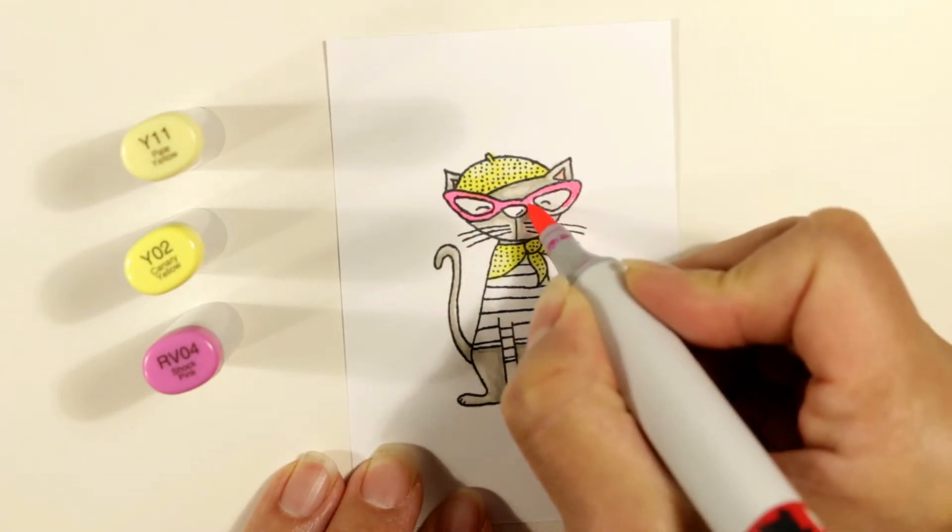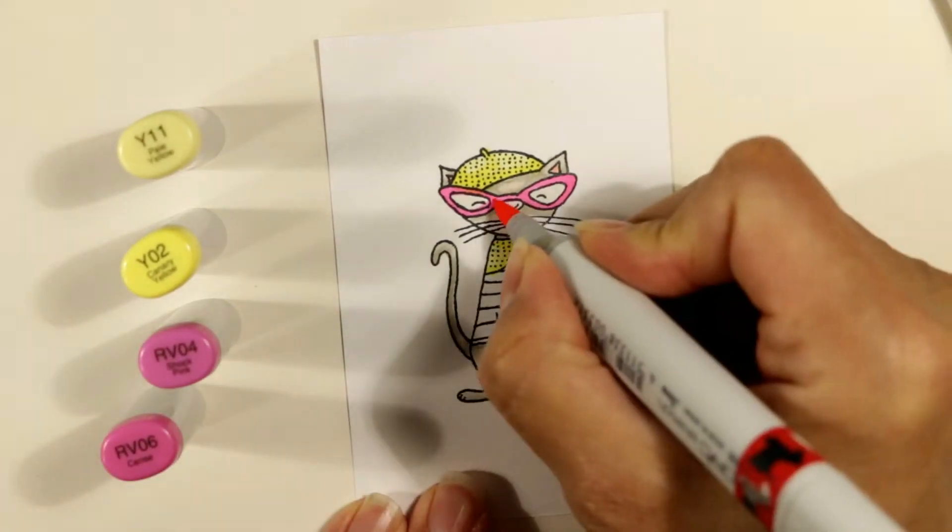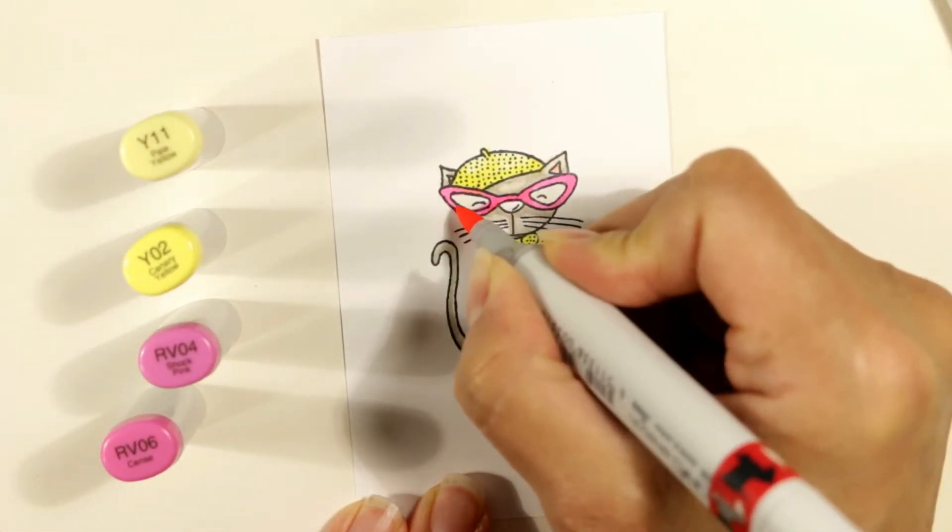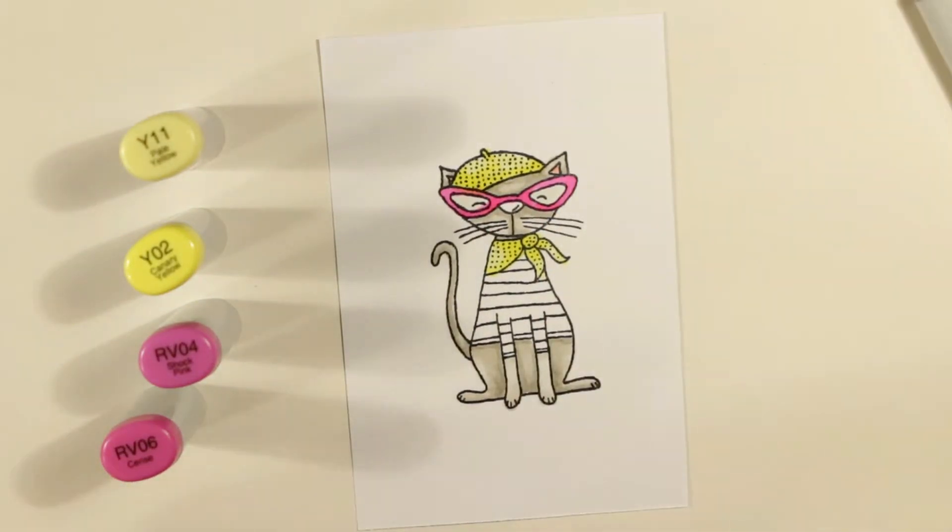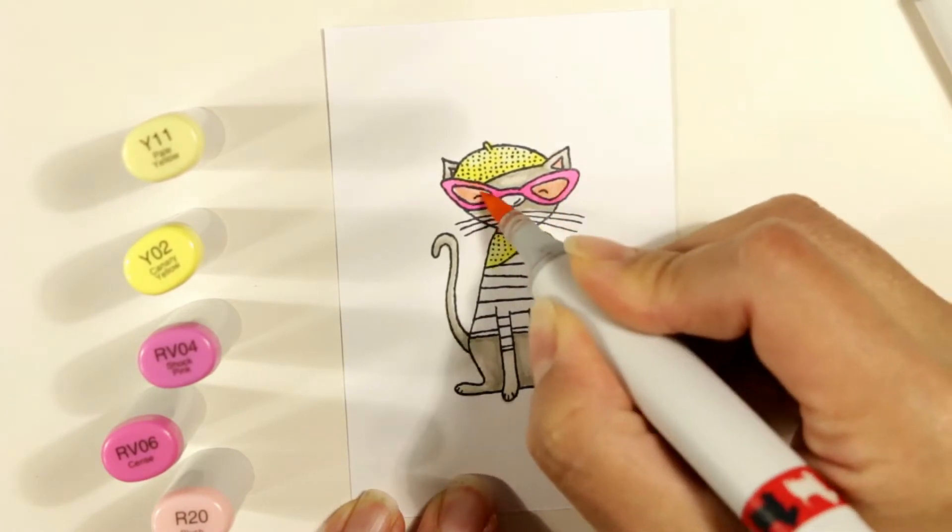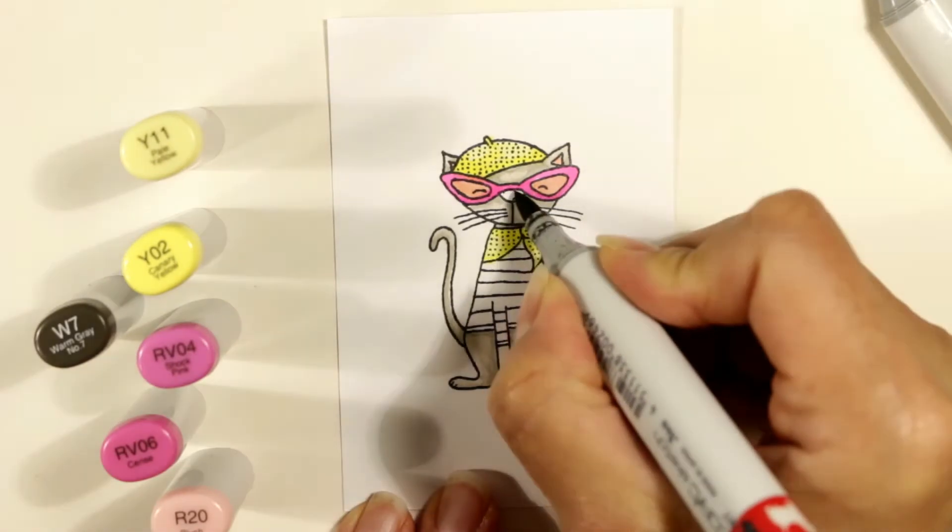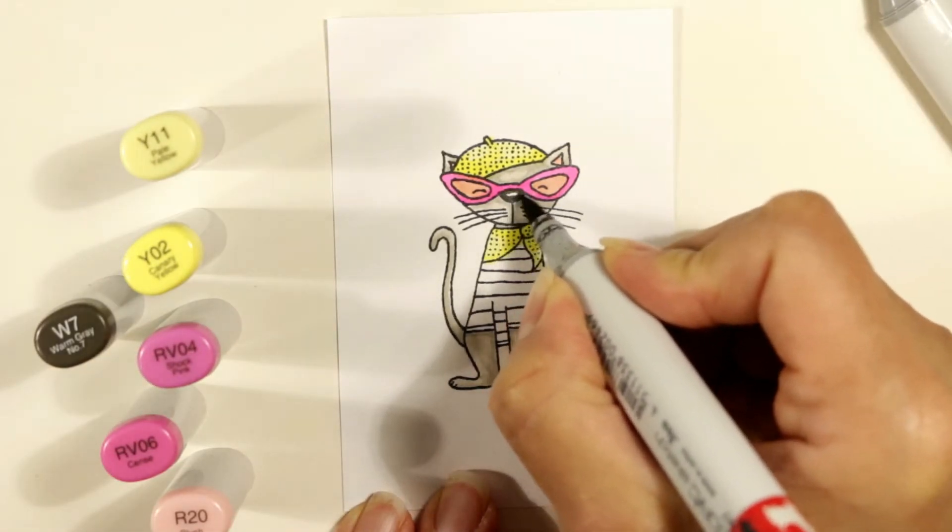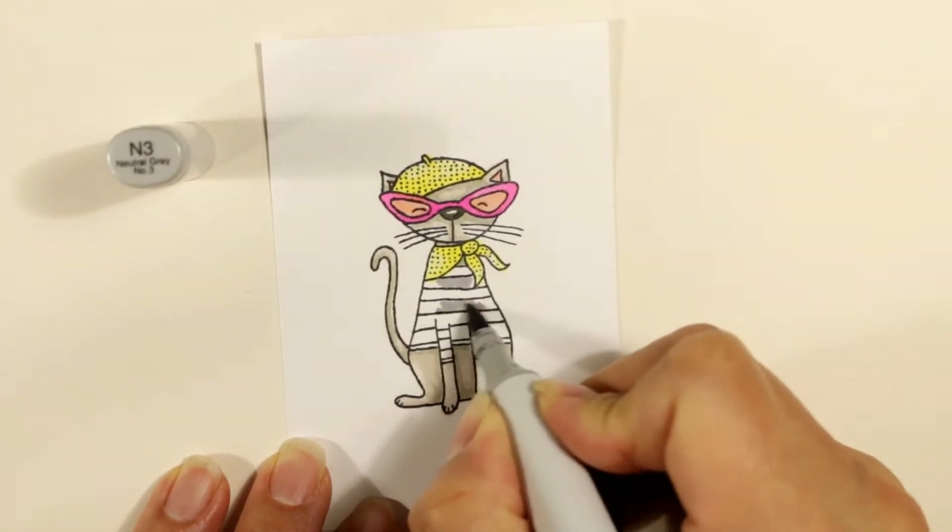For the glasses, I want her to have hot pink glasses. So I'm using an RV04 and then adding a little bit darker shade at the nose bridge area and on the lower parts of the glasses, just to get a little bit of dimension. I didn't want it to be flat. Then I decided she could have rose colored glasses. So I colored in the glass area with a R20. Then I realized I forgot to color up the nose. So I used a W7, leaving a little white highlight area.